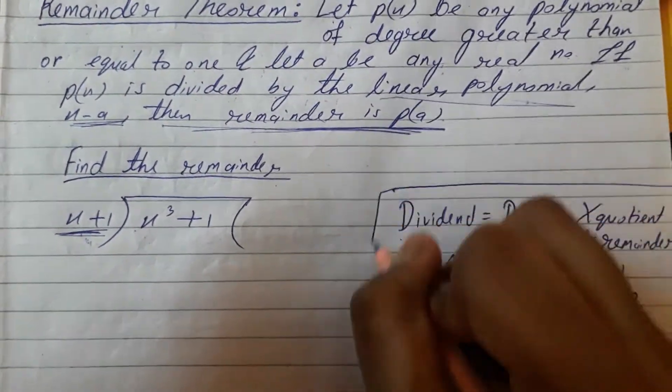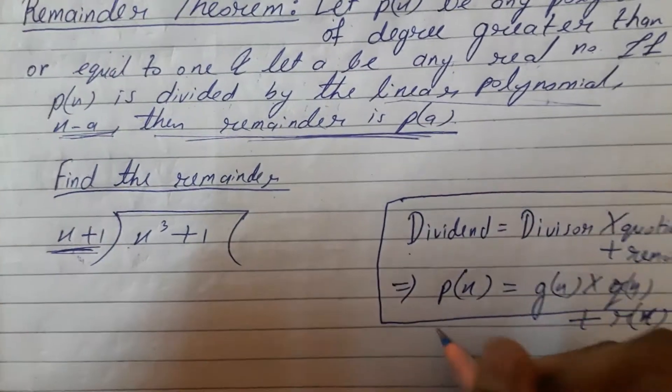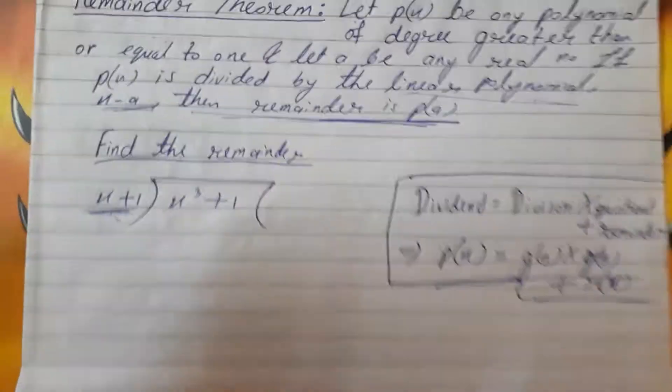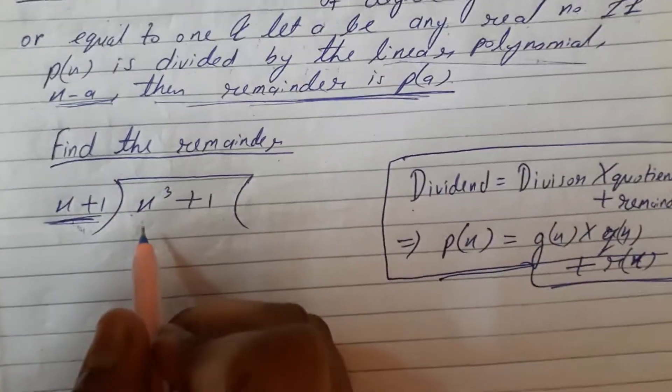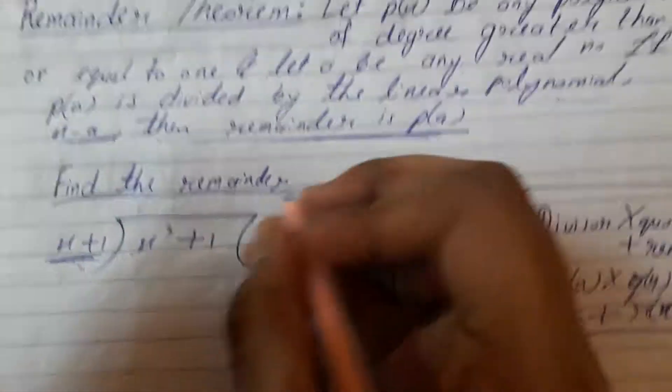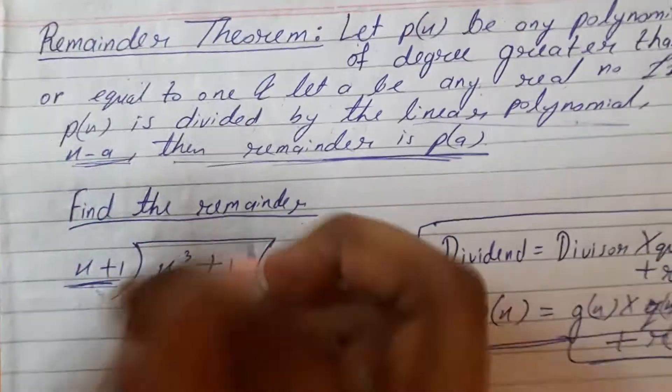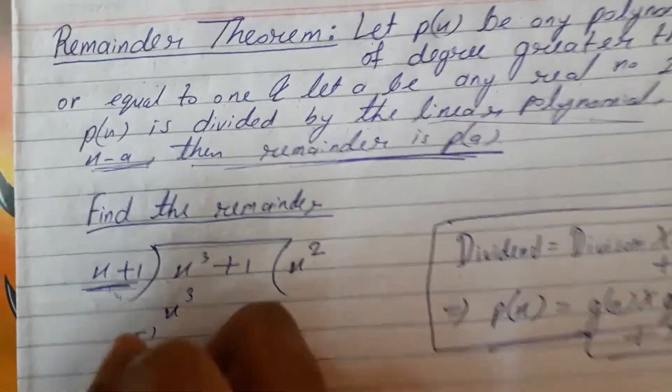See, x plus 1 divided by x cubed plus 1. See, x squared into x gives x cubed, minus x squared. Plus and minus cancel out, then plus x squared minus, minus gives plus x squared plus 1.